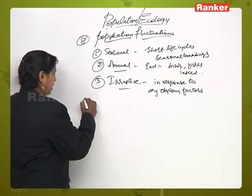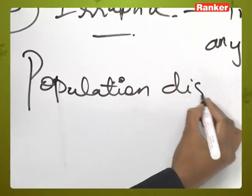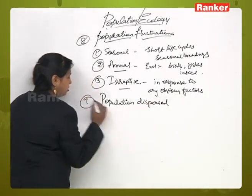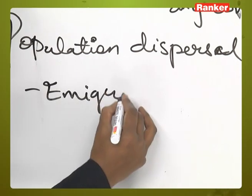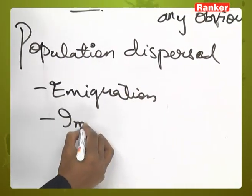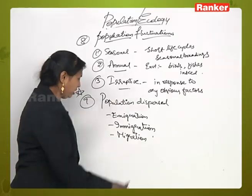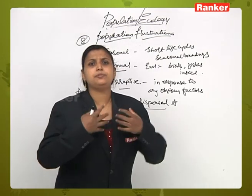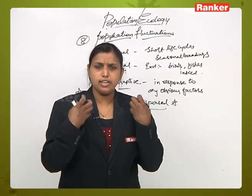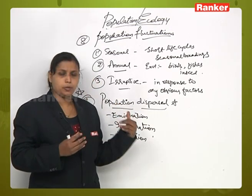The next most important characteristic — the ninth one — is population dispersion. In this, we will talk about three terms: emigration, immigration, and migration. Population dispersion means dispersing, moving away, or leaving from the particular area where we are living — dispersing from the original place.